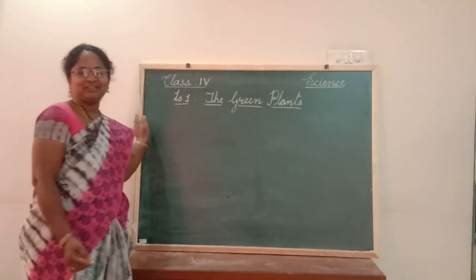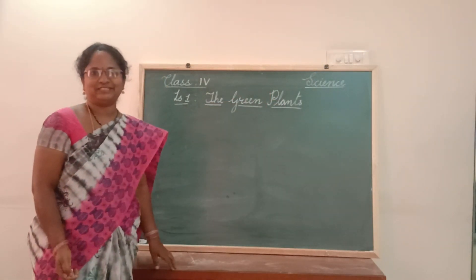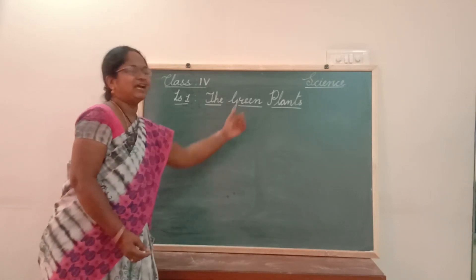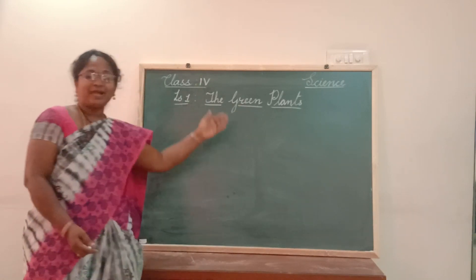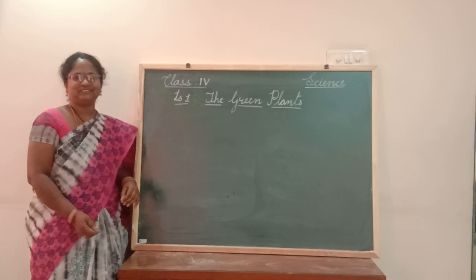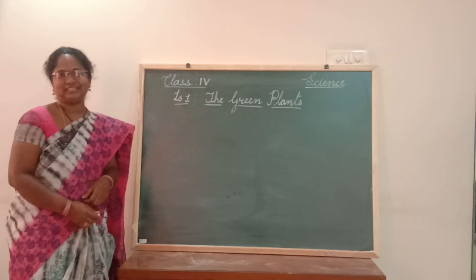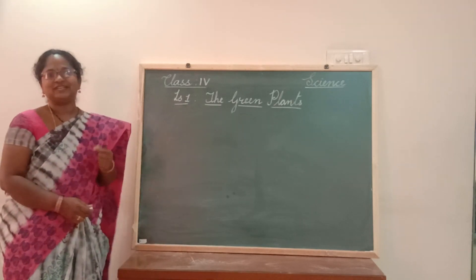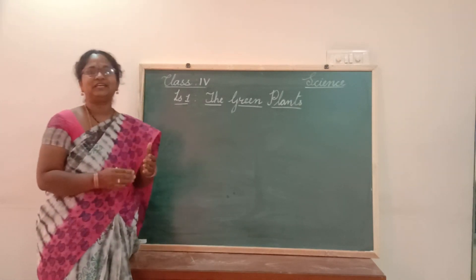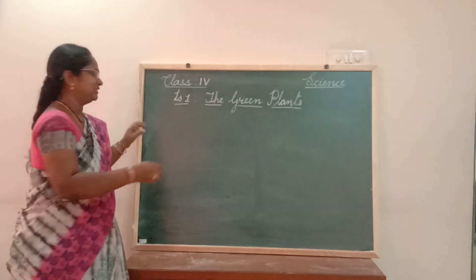We see the green world around us. The green world is green because of plants. Why are the plants green in colour? Plants are green in colour because of the green leaves.